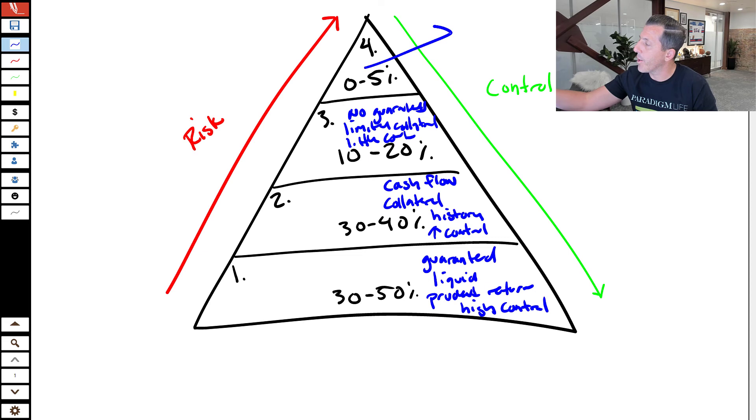And then tier four, as you can imagine, this is just speculation. There's obviously no guarantees. You could lose everything. There's typically no collateral either. You can lose everything. Sometimes you can lose more than what you've invested. So there's different assets that fall into this, which you will see inside of the tool, but this is a general idea of the criteria that determines each tier.